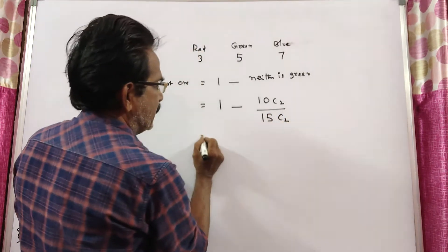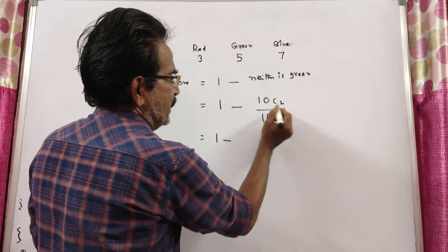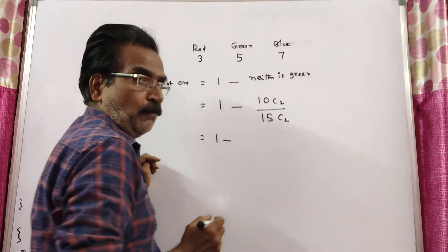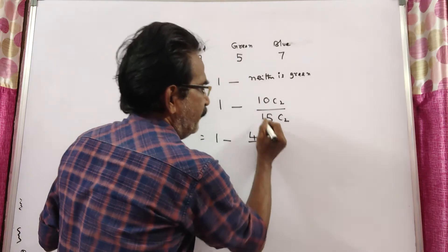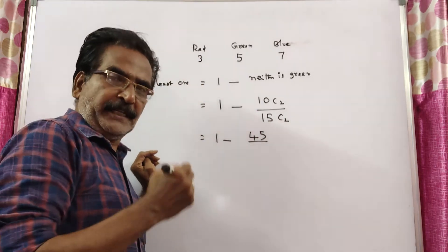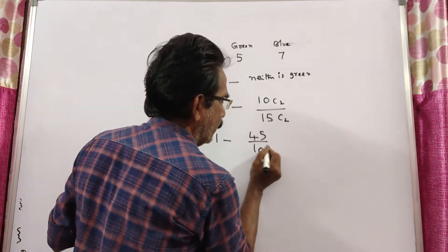Total number of cases is 15 C2. So we have 1 minus 10 C2 over 15 C2. 10 C2 equals 10 into 9 by 2, which is 45. 15 C2 is 15 into 14 by 2, which is 105.